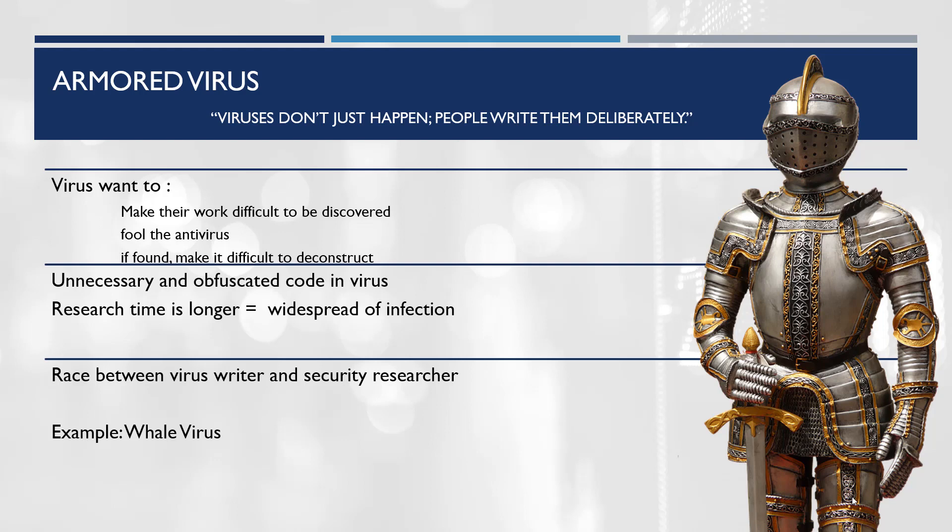Armored viruses are very complex and have significant code involved which adds to their armor. Although quite effective, the flip side is that all the armor creates a very large virus that can be detected more easily before it has a chance to infect anything. Security researchers use the size of the file to identify whether it's a virus or a legitimate file.